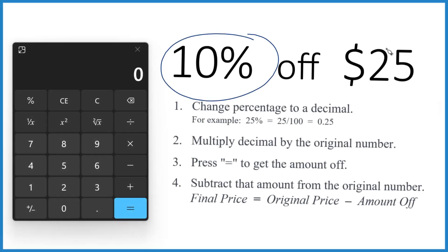Let's take 10% off of $25. So if you're buying something that's $25, you get 10% off. How much do you save and what's your final price?